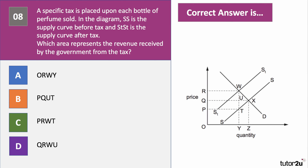The tax per unit is the vertical distance between the two supply curves — shown by the vertical distance WT, which is also the same as RP. The tax revenue is the output OY multiplied by the tax per unit. So the tax revenue is area PRWT — tax per unit multiplied by quantity. It looks as if the consumer and producer burden in that situation is more or less equal.